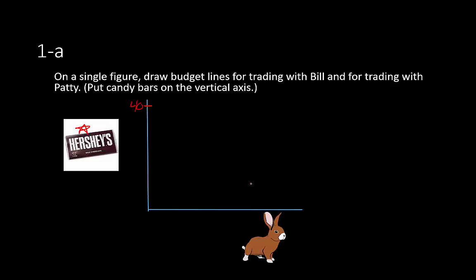What if we were to trade all of our candy bars? Let's do Bill first. He's willing to trade four rabbits per candy bar, so if we trade all 40 candy bars, that gives us 4 times 40, which is 160 rabbits. So the line for Bill goes from 40 on the vertical axis down to 160 on the horizontal axis, with all combinations in between.